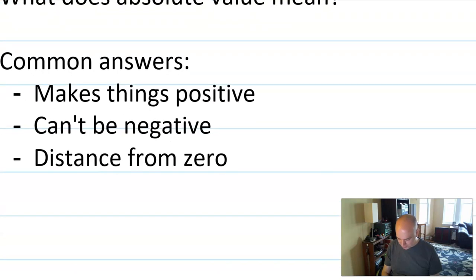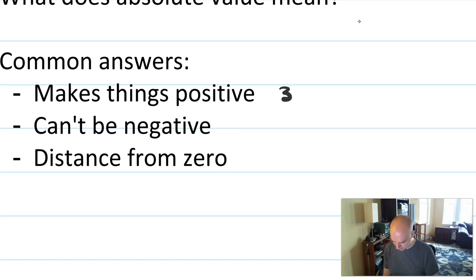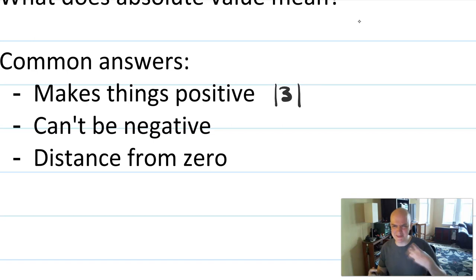And those are all true, sort of, kind of, but they're also not hugely mathematically rigorous. For example, 'makes things positive' — well, what about three? Three is already positive. So did the absolute value of three do anything? Did it make it positive, or did it just do nothing? Was it useless there?